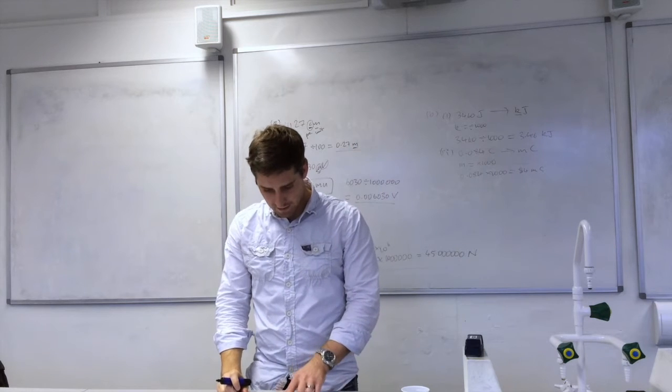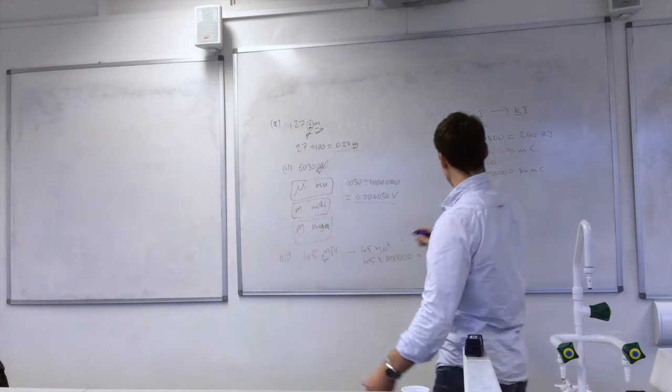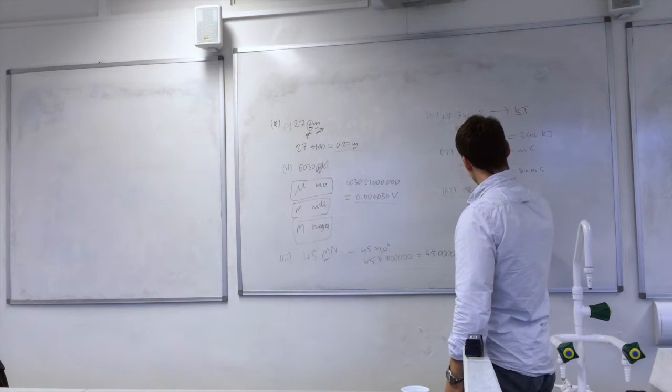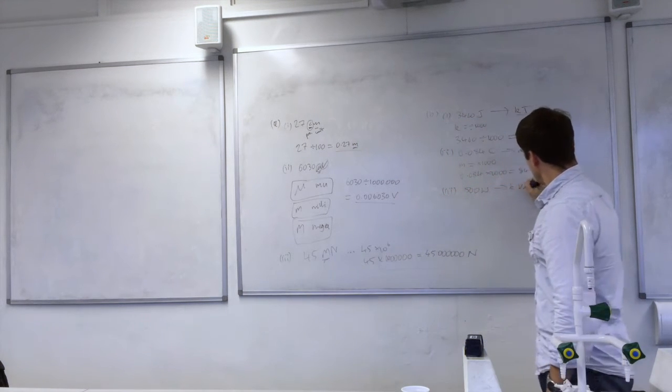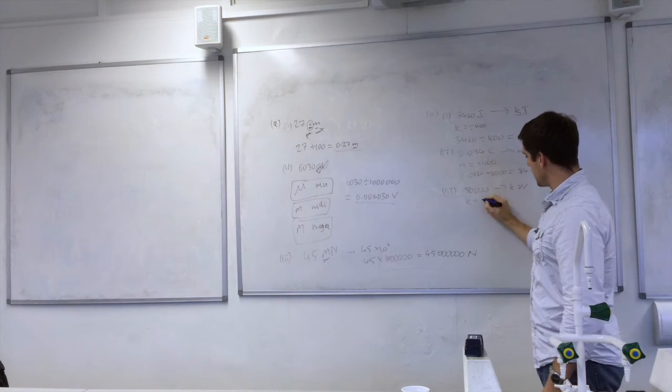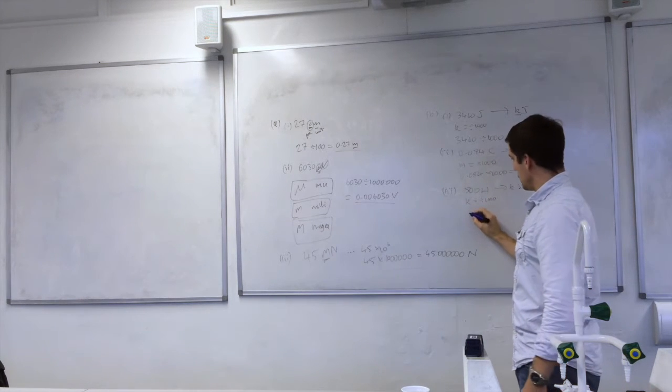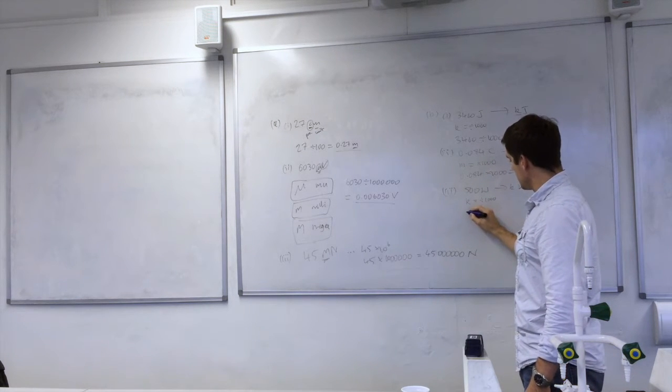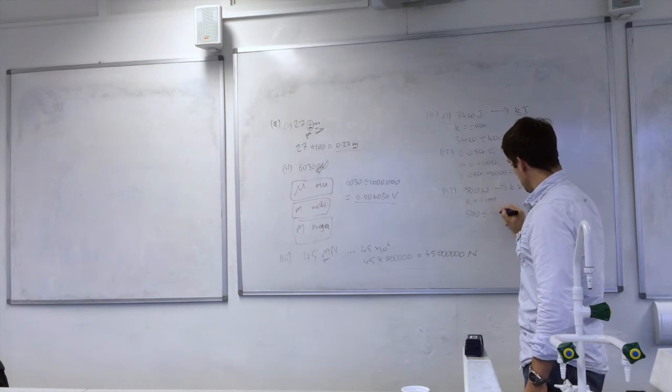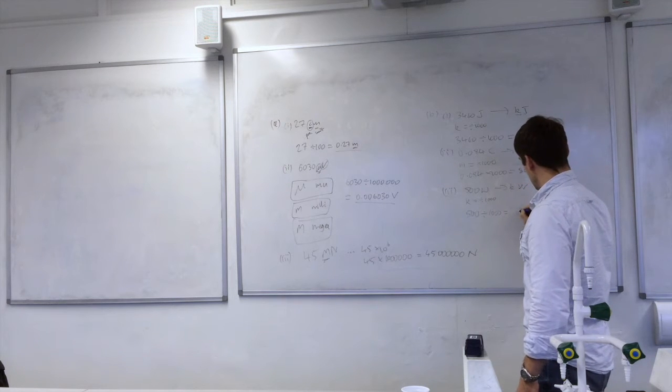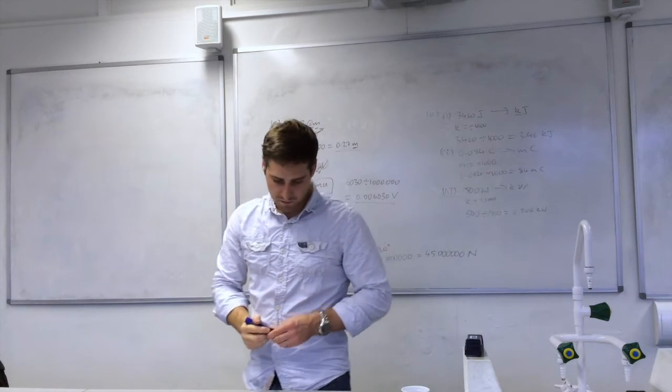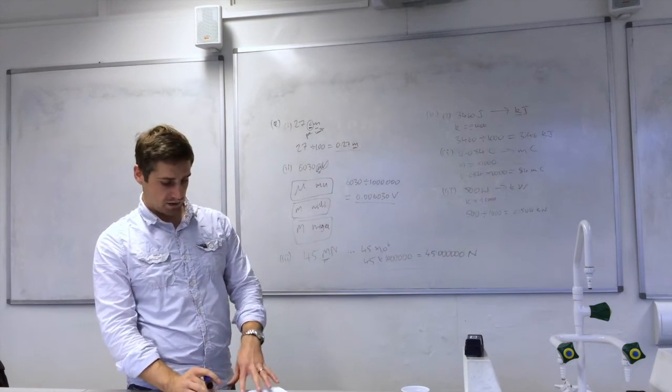And lastly, given the power, 500 watts needs to be divided by 1,000. So k, the same as above, divided by 1,000. So we do 500 divided by 1,000. And that equals 0.5 kilowatts. So we've done our conversions there, into prefixes and out of prefixes.